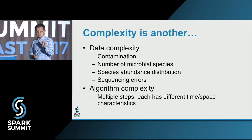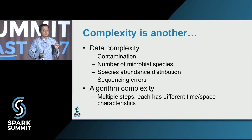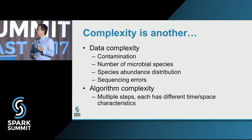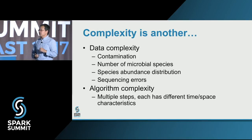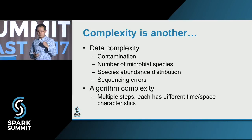Complexity has two aspects. One is the data complexity — sometimes we get contaminants during the lab process, and complexity is also defined by the number of species in the community and their abundance distribution. The sequencing process also generates noise because it is not a hundred percent accurate. The second aspect is algorithm complexity. Like many bioinformatic pipelines, we often need several steps to remove this noise and transform the data in different ways. Each step may have very different time and space complexity, which makes performance improvement harder.